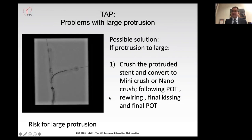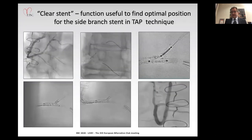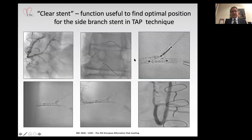The problem is that sometimes, as in this case, it is very difficult to find the optimal position for the TAP. What is very useful is the stent boost or clear stent function, which is now a standard function in many cath labs. You can use this function to achieve a perfect position for the side branch ostium stent.